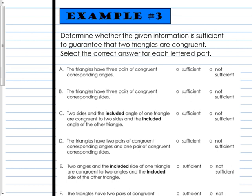So letter A, the triangles have three pairs of congruent corresponding angles. So AAA. Is AAA a real thing? No, it's not. So it would be not sufficient.